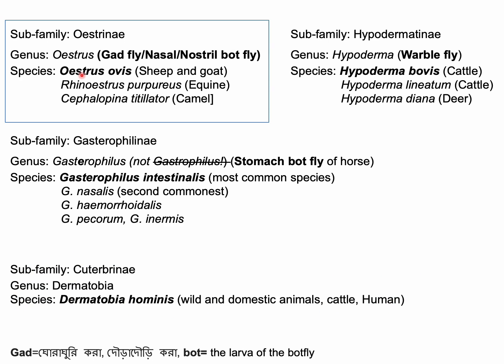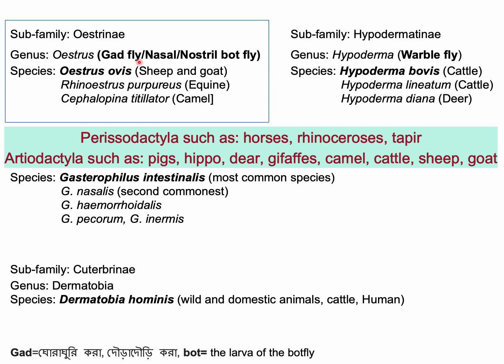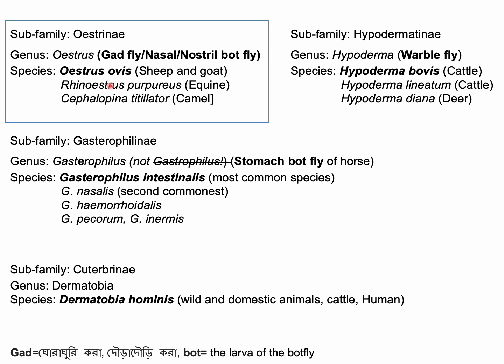The larval stages of bot fly or nasal bot fly develop in the nasopharyngeal cavities of perissodactyla and artiodactyla. The important species are Oestrus ovis, Rhinoestrus purpureus, and Cephalopina titillator. Oestrus ovis mostly infests sheep but rarely infests goats; Rhinoestrus purpureus infests equines; and Cephalopina titillator infests camels. Among these flies, Oestrus ovis is distributed worldwide, and this lecture focuses on Oestrus ovis infestation in sheep.